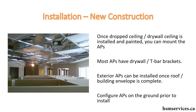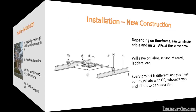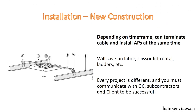For the most part, access points are configured with a controller unless you have a small network. It's better to plug access points directly into the switch and make sure all your access points are online on the ground before you start hooking them up in the ceilings and outdoors. Depending on how big the building is and the timeframe, you might do the termination of the cable, AP install, and certification all at the same time. That'll save you on labor, scissor lift rentals, ladders, and that kind of thing.